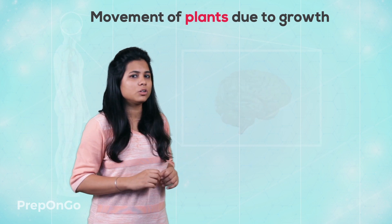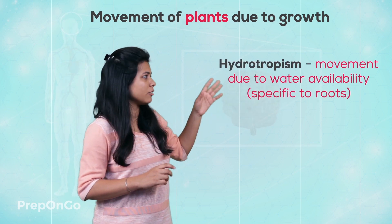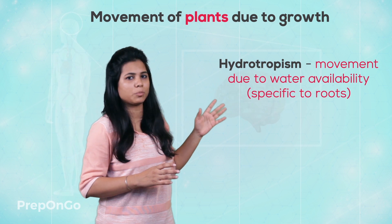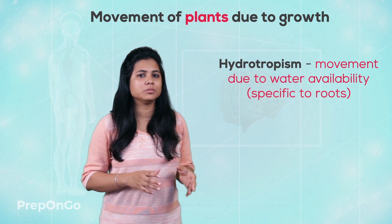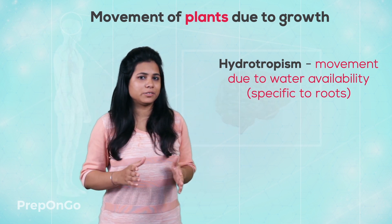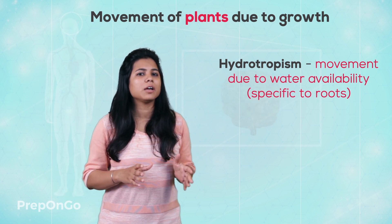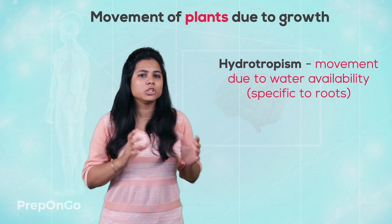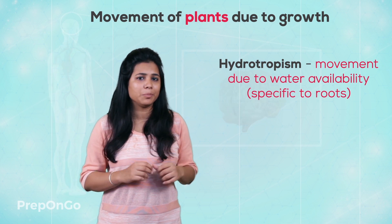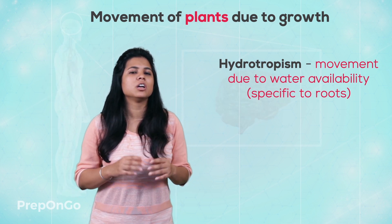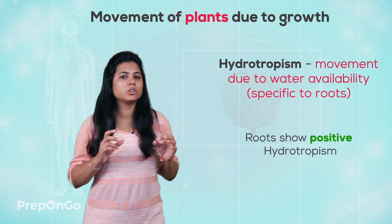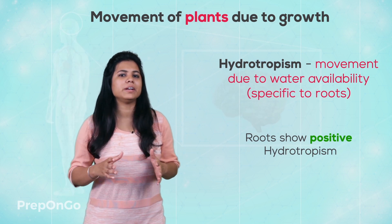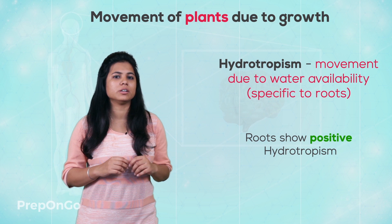Now let's have a look at the third agent that affects tropism, which is hydrotropism. Hydrotropism is root specific. The roots are more prone or more hydrotropic towards areas where water is available in abundance. So we can say that roots show positive hydrotropism by bending towards the area where water is available.